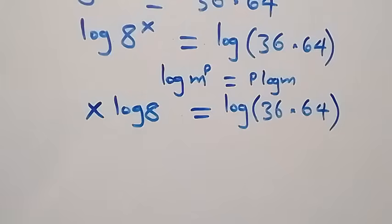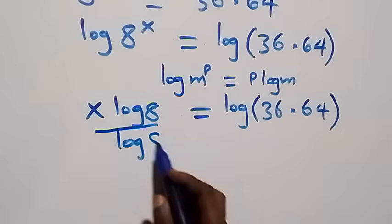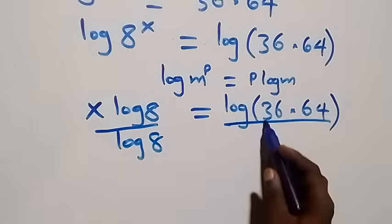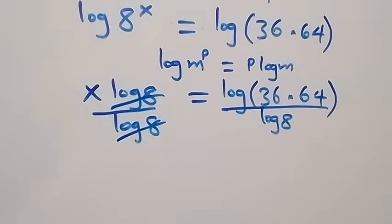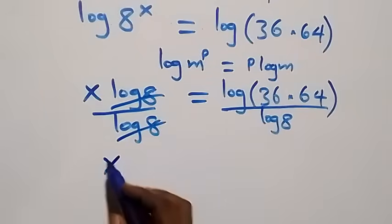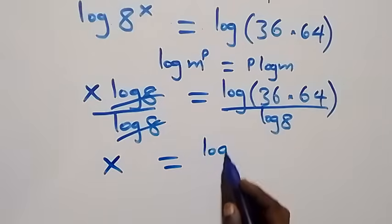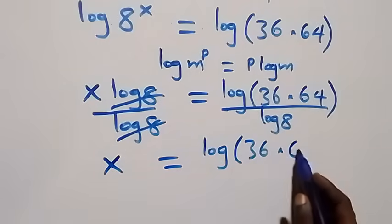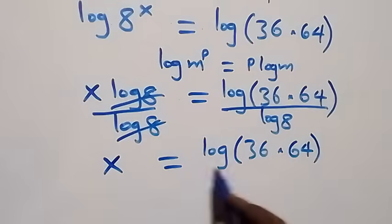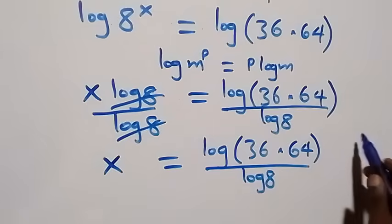Next step, we divide both sides by log 8. Dividing this side by log 8 and also this side by log 8, log 8 cancels and we have x left, which equals log 36 times 64 over log 8.